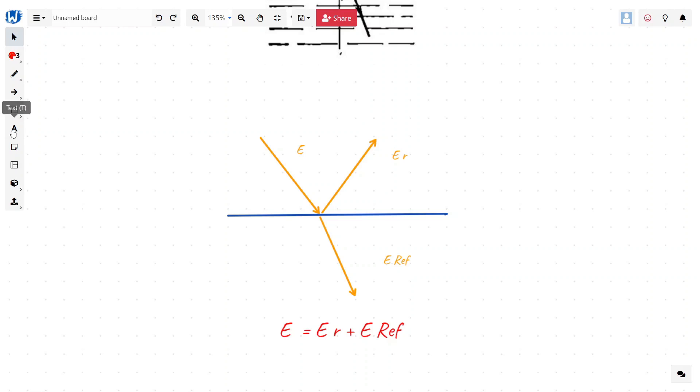A reflection factor is nothing but how much energy is getting reflected divided by total energy which is incident.